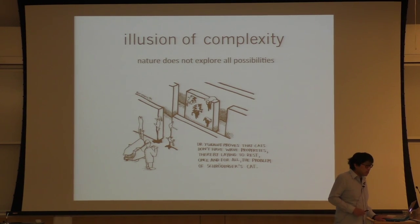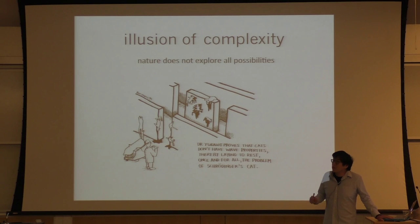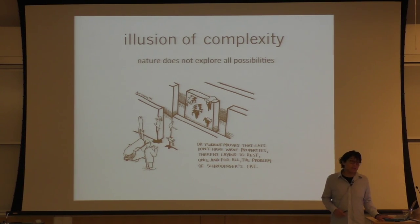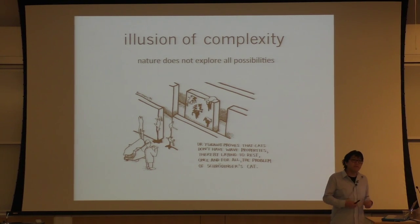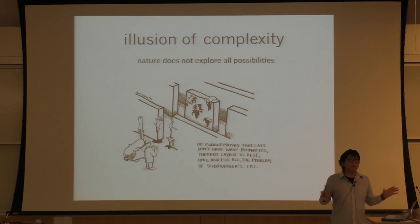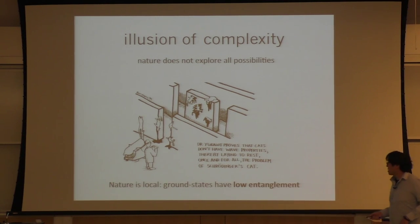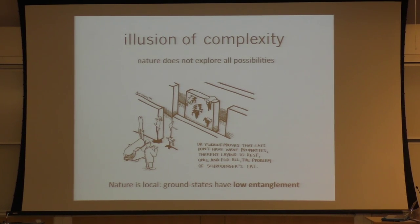Once we recognize that physical quantum states have special structure, the exponential complexity isn't there, so long as we know what that special structure is. It turns out one of the most important characteristics of physical quantum states is locality. Locality simply means that if you poke something, you don't see something happen on Pluto. Typically the response of systems is relatively local. More mathematically, in the low energy sector, states have very little entanglement.